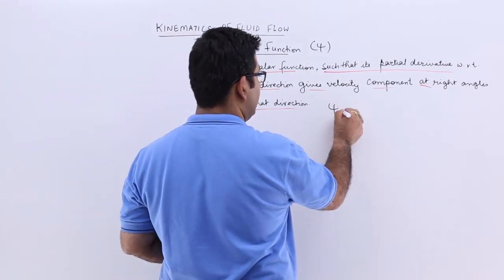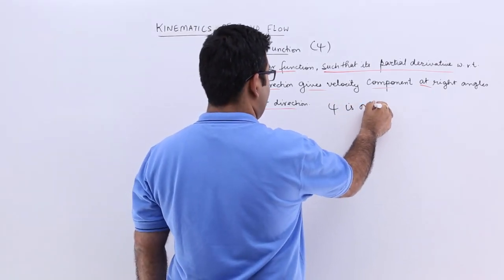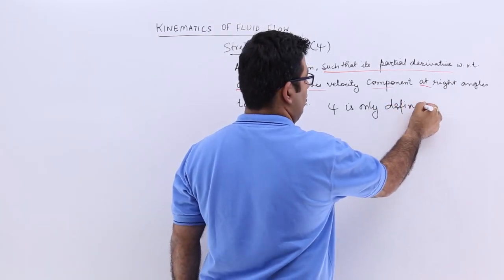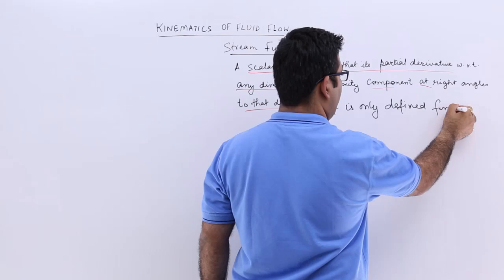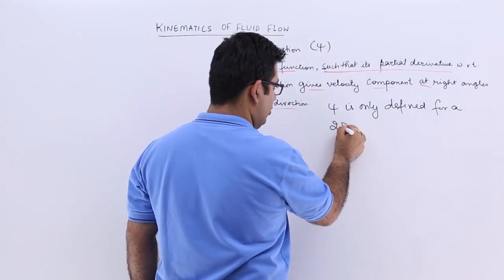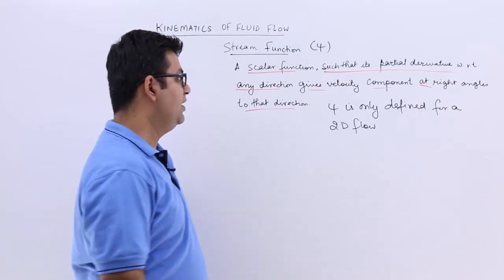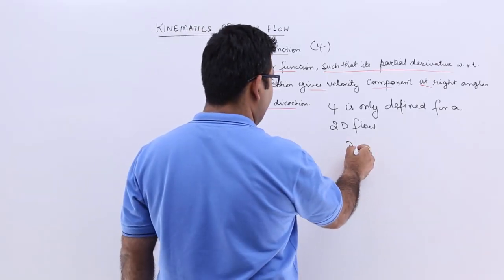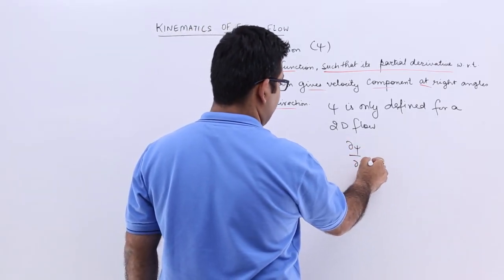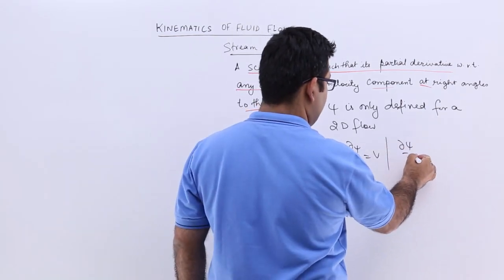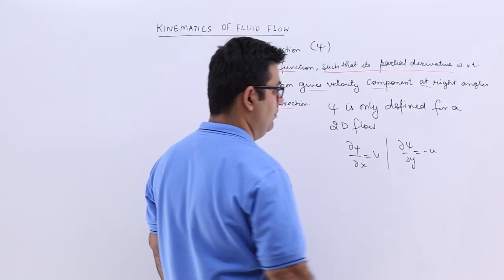this psi is only defined for a two-dimensional flow. This means I will only have x and y. So this would be v and if I find out for y it will be minus u.